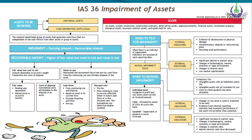However, IAS 36 also talks about annual impairment testing — for which indications are not required. There are three types of assets that must be tested annually: number one, Goodwill; number two, Intangible assets having an indefinite useful life; or intangible assets not yet available for use. For these three assets, no indications are needed — they must undergo annual impairment testing. For the remaining assets like land, building, plant and machinery, indications are required — either internal or external.